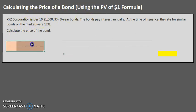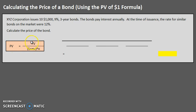The main formula we are going to use is the present value of a dollar formula: Present Value equals Future Value divided by (1 plus the market rate) to the power of n. The future value represents all of the future cash flows to be paid, since we are the ones issuing the bond. The market rate is 12%, and n is the number of periods.